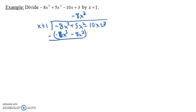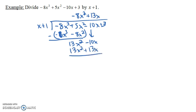The negative 8x cubed minus another negative 8x cubed is like plus 8x cubed, and that goes away — that first term should always go away if you did it correctly. Now we have 5x squared minus a negative 8x squared, that's like plus 8x squared, which gives us 13x squared. We bring down the minus 10x — not the plus 3 yet. What times x gives us 13x squared? It's 13x.